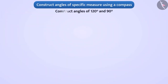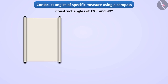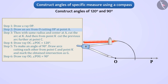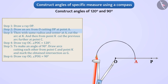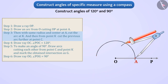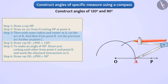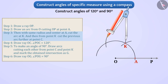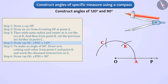Now we will see how to construct angles of 120 degrees and 90 degrees. Step 1: Draw a ray OP. Step 2: Place the compass at O and draw an arc cutting ray OP at point A. Step 3: Keeping the same radius, place the pointed end at A and draw an arc, naming the intersection K. Then place the pointed end at K and draw another arc, naming the new intersection point C. Step 4: Drawing ray OC from O gives angle POC measuring 120 degrees.